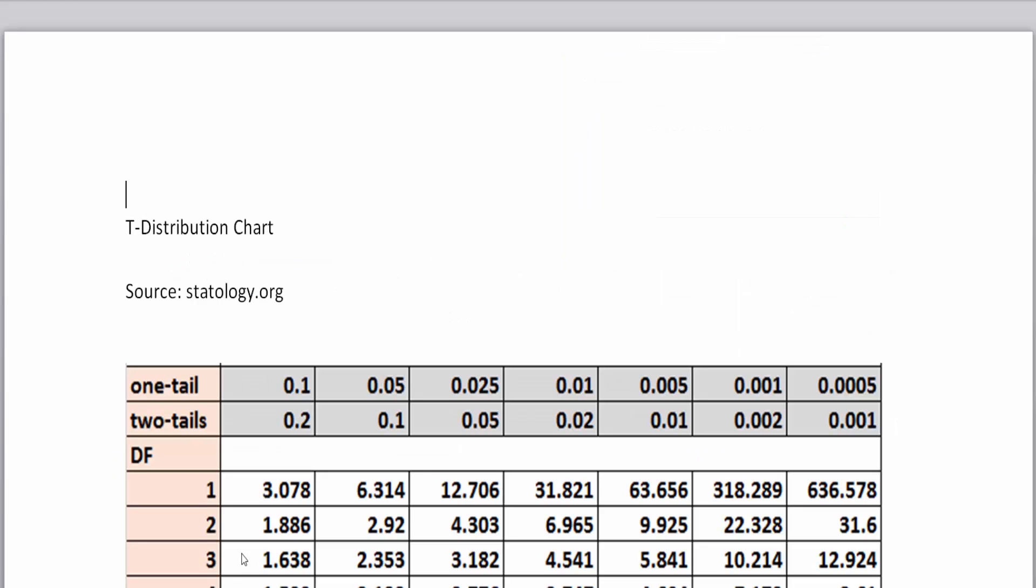You'll also notice on the back side that there is another chart, but we're going to look at that during a different unit. So keep this T distribution chart in front of you because we're going to need it to get our T values that we're going to need for our EBM as we do our confidence intervals using smaller distributions.